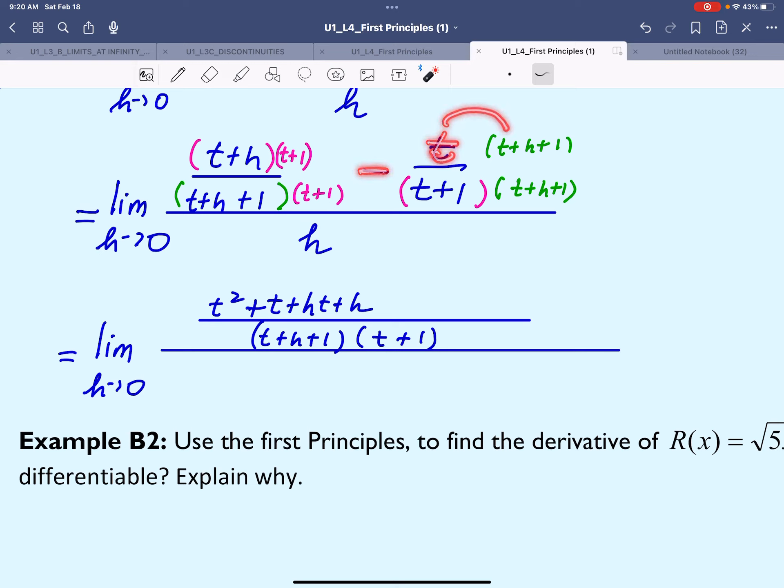So minus t times t is t². Minus t times h is -th. And minus t times 1 is -t, all over h.